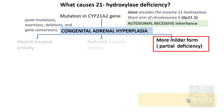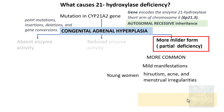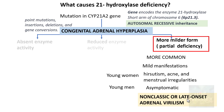The third type is a much milder form due to very partial enzyme deficiency, and fortunately it is the most common form. Young women manifest with hirsutism, acne, and menstrual irregularities, and these patients are often confused with polycystic ovarian disease (PCOD). There are no symptoms in young men. This is referred to as non-classic or late-onset adrenal virilism.